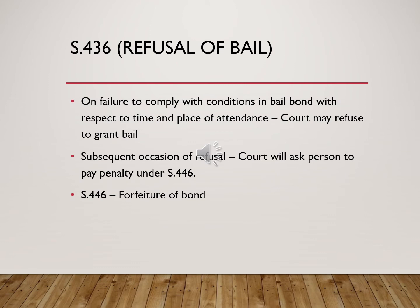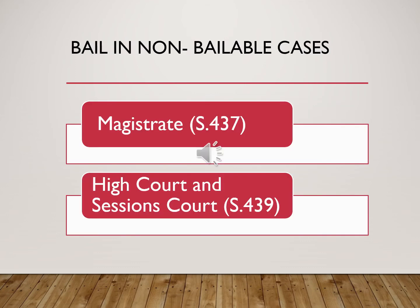On failure to comply with conditions laid down in the bail bond with respect to time and place of attendance, the court may refuse to grant bail. On any subsequent occasion of not furnishing bail, the court will ask the accused person to pay a penalty as per Section 446. Bail in non-bailable cases can be divided into two parts: bail given by the magistrate under Section 437, and bail given by the High Court and the Court of Sessions under Section 439.